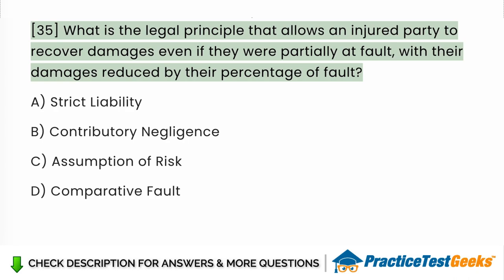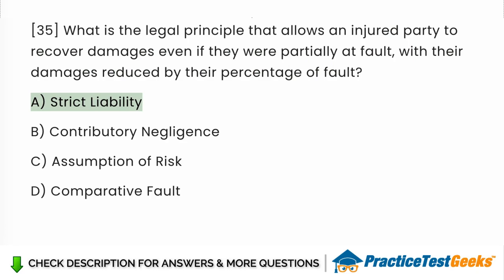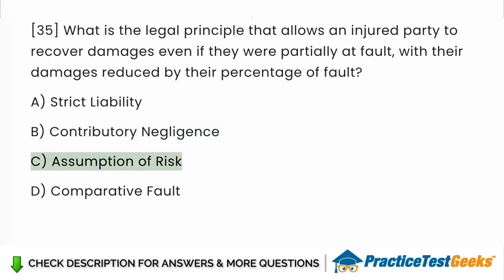What is the legal principle that allows an injured party to recover damages even if they were partially at fault, with their damages reduced by their percentage of fault? a. Strict Liability. b. Contributory Negligence. c. Assumption of Risk. d. Comparative Fault.